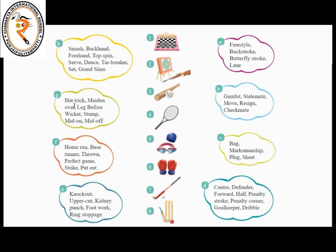Next is hockey. The seventh one will be matched with D: center, defender, forward, half, penalty stroke, penalty corner, goalkeeper, and dribble. Next is cricket — the eighth one is G: hat trick, maiden, over, leg before wicket, stump, mid on, mid off. These terms belong to cricket.